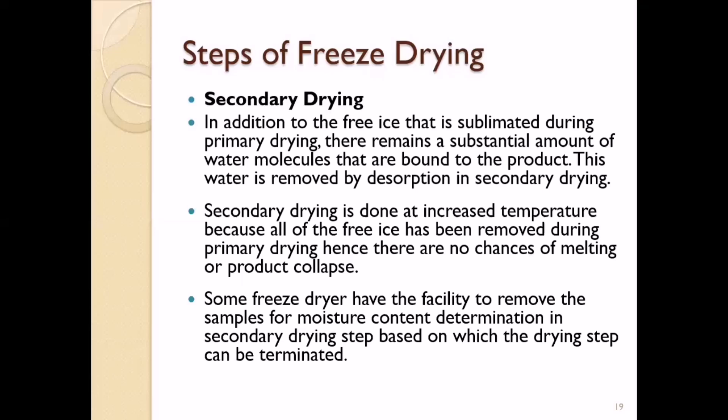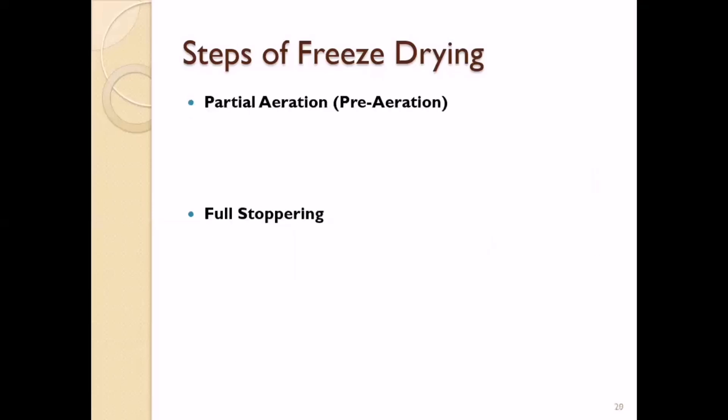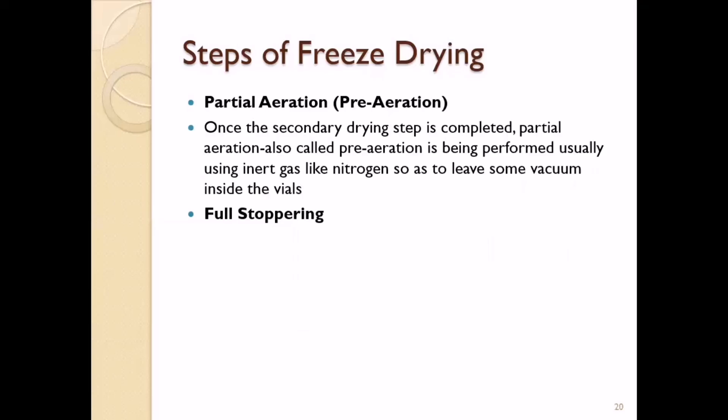At the end of secondary drying, the required moisture content in the product is achieved. Some freeze-dryers have a facility to remove samples for moisture content determination during secondary drying, based on which the drying step can be terminated. Once secondary drying is completed, partial aeration — also called pre-aeration — is performed using an inert gas like nitrogen to break the high vacuum to a certain level, leaving some vacuum inside the vials.